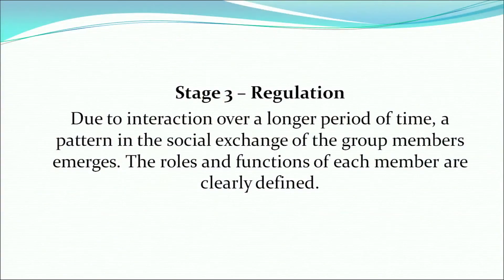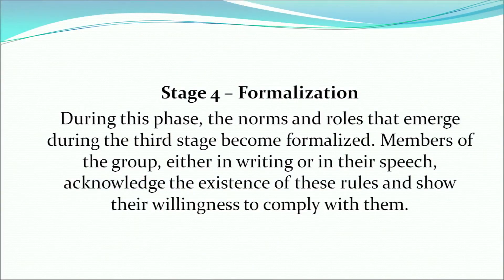Next, we have regulation. Due to interaction over a longer period of time, a pattern in the social exchange of the group members emerges. The roles and functions of each member are clearly defined — this is regulation, meaning each member knows how they are going to operate and what their roles or functions will be. The last stage is formalization. During this phase, the norms and roles that emerged during the third stage become formalized. Members of the group, either in writing or in speech, acknowledge the existence of these rules and show their willingness to comply with them. These are the four important stages in group formation.